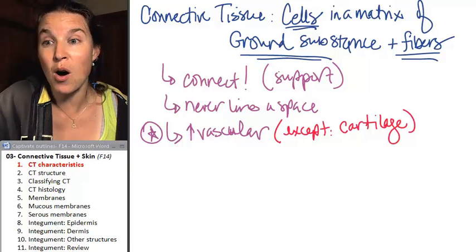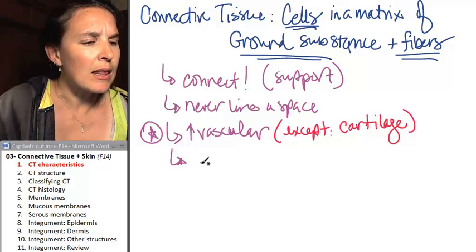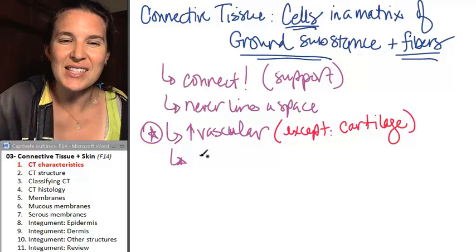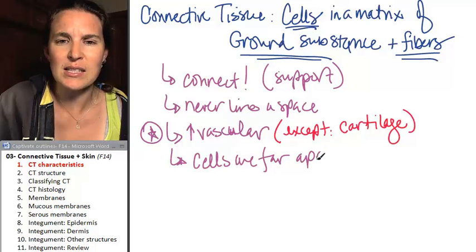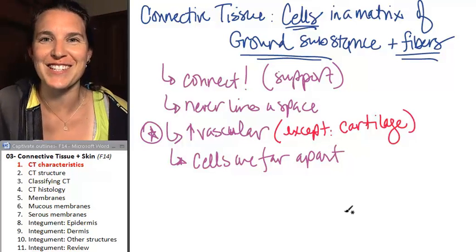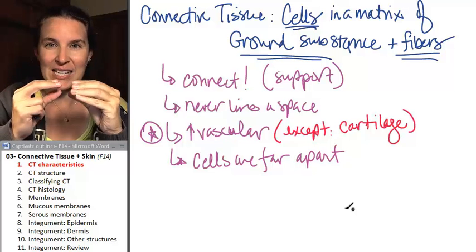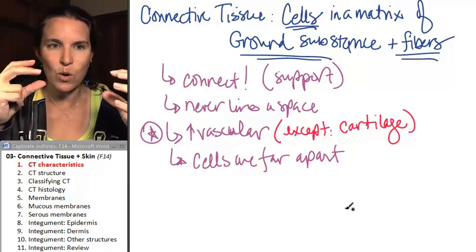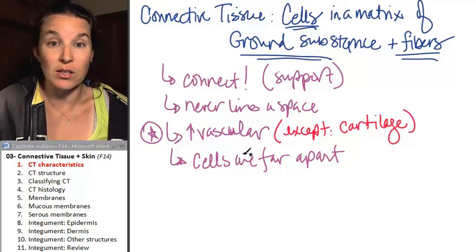Most of them are highly vascular. No free surfaces. Your cells are far apart. How is this different from epithelial tissues? Remember our epithelial cells were tightly packed together. Like you had a really nicely organized bunch of cells. In connective tissue, it looks like a mess.